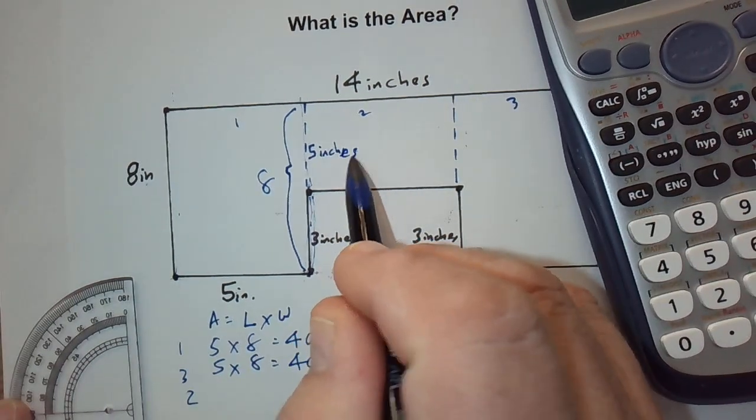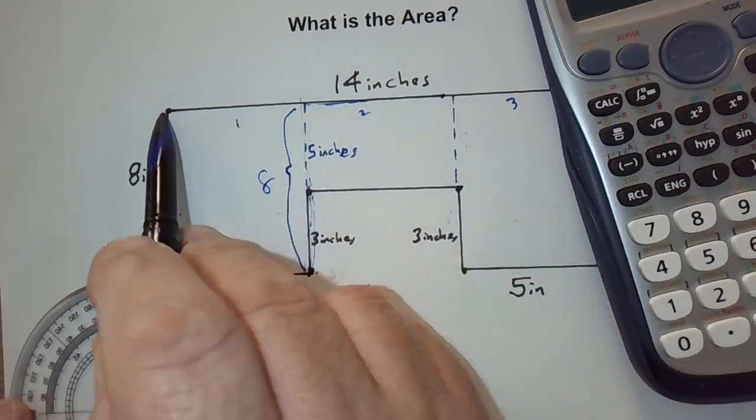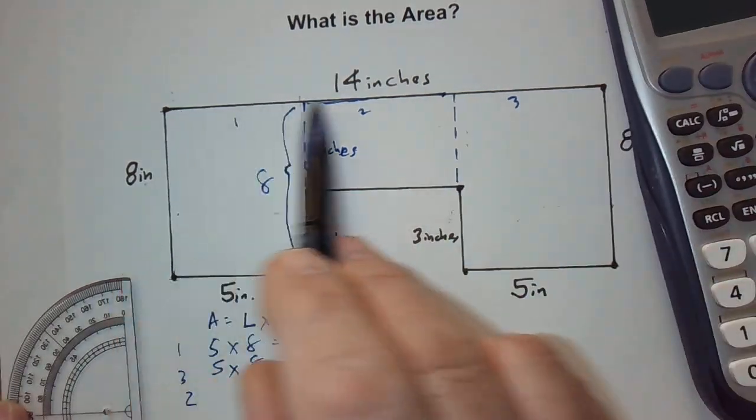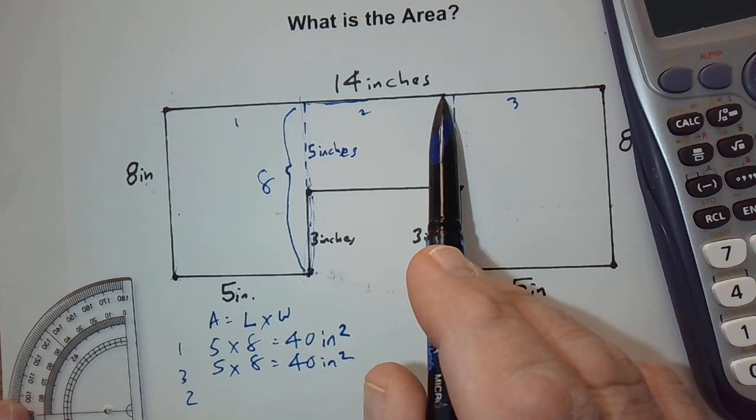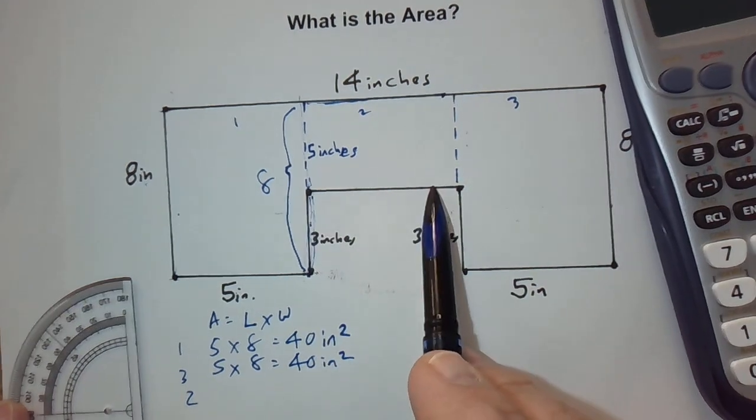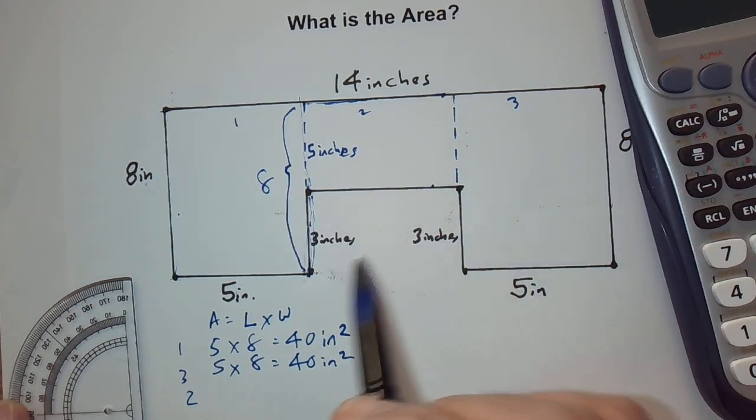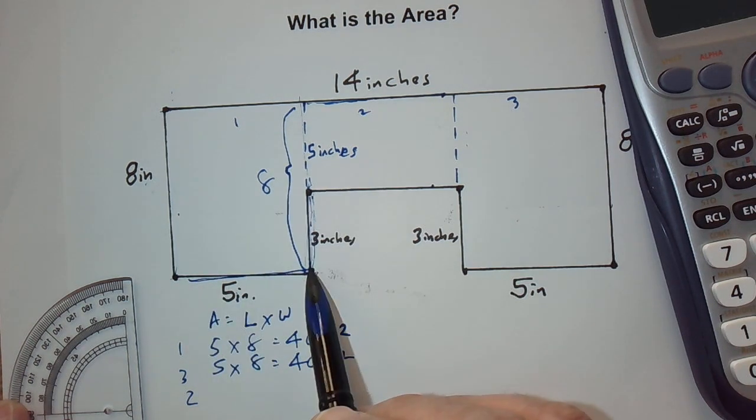Then, we need to figure out this part from here to here. We know the entire distance is 14 inches. We just need to find this part here, but it's not listed, nor is it here. Well, how do we figure that out? Well, we know that this part here is five. We know this part here is five.